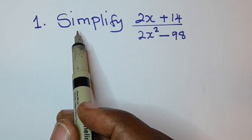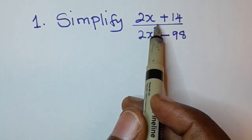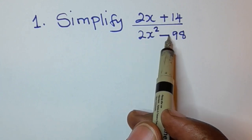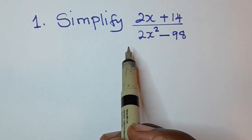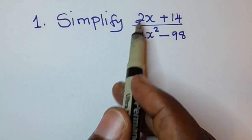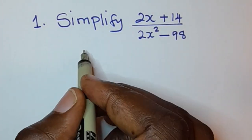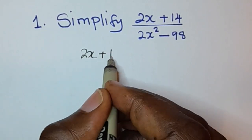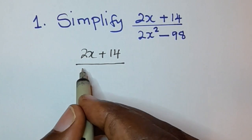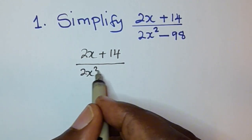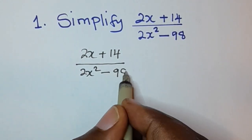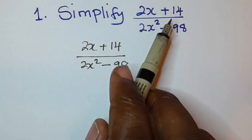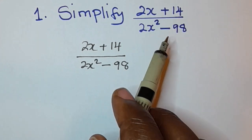Here is our first question: simplify 2x plus 14 over 2x squared minus 98. So let's rewrite this expression: 2x plus 14 over 2x squared minus 98. When they say simplify, it means something is looking too big, so we need to make it look simple.